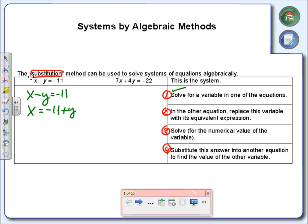Step two says in the other equation replace this variable with its equivalent expression. I'm going to use the 7x plus 4y equals negative 22. I'm going to replace the x with its equivalent expression, which is negative 11 plus y. Everything else stays the same. This is why we call it substitution - we're taking something out and replacing it with something else.